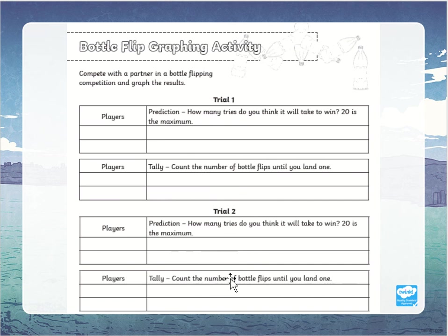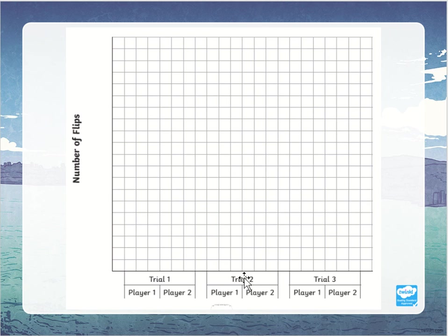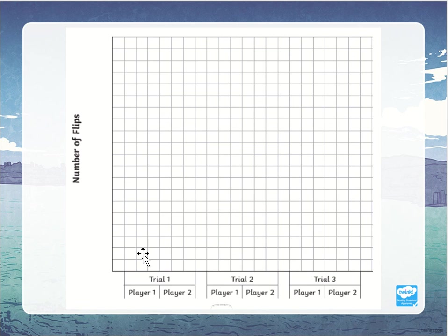Then go again and try that again. After you do that, see if you can graph your results. Put numbers on the side of the graph for number of flips, draw a column graph, and graph your results. All right, have fun!